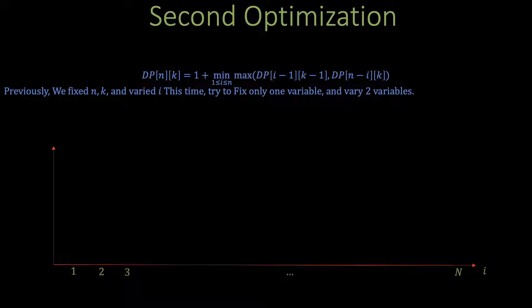Now if you play a lot with the recurrence above you might get this idea. Let's first fix the variable k. So let's set it to say 20 or 30 just any fixed constant and let us try to draw how the recurrence would look like as we vary i and n simultaneously.